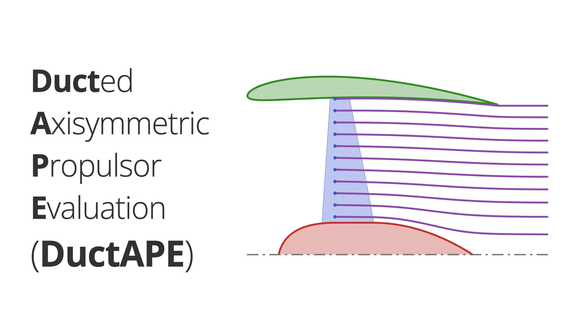To the end of better exploring electric ducted fan design spaces, we have written Duct Tape, a ducted axisymmetric propulsor evaluation code, written in the Julia language, that is designed for use in gradient-based multidisciplinary optimization.